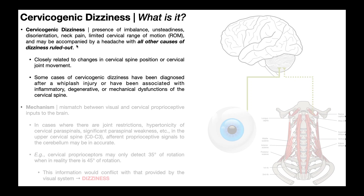With cervicogenic dizziness, the dizziness itself is closely related to changes in either the position of the neck or movement of the neck. A lot of cases are diagnosed after some kind of acute trauma to the neck — it could be whiplash following a motor vehicle accident, or it could be inflammatory or degenerative changes to the cervical spine.